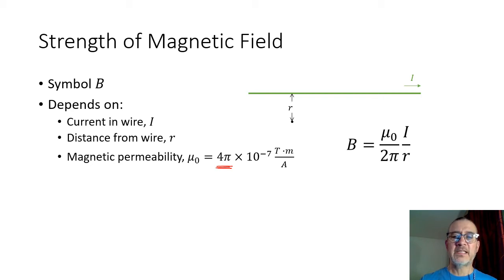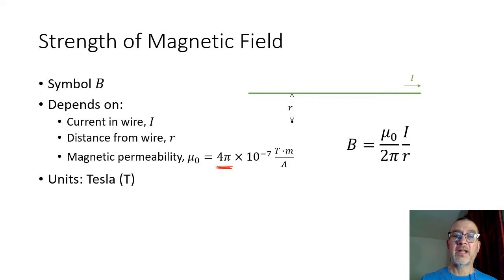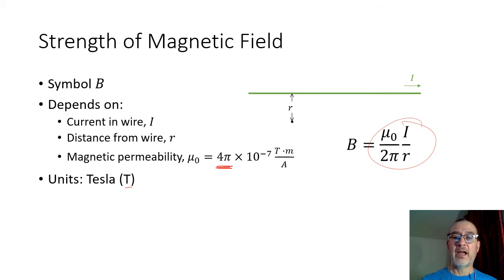Mu naught has the value 4π times 10 to the minus 7. That's interesting — the π is in the value itself, so mu naught is 4π × 10⁻⁷, and that T stands for Tesla. So Tesla times meters divided by amperes: the current in amperes, the R in meters, and the magnetic field strength in Tesla. The units are going to cancel out, leaving you with Tesla — named after Nikola Tesla. You'll notice since there's a π in mu naught and a π in the denominator, the π's are going to cancel out.